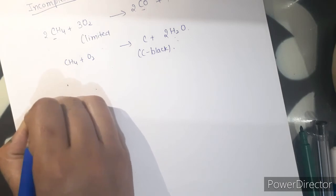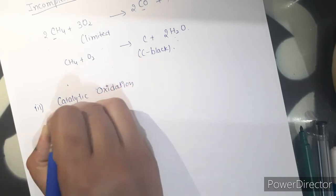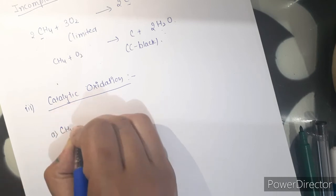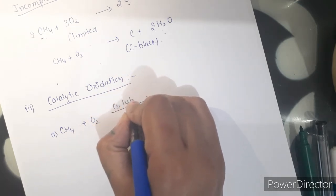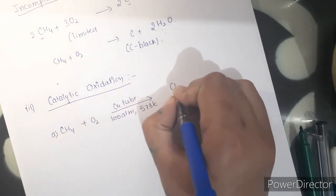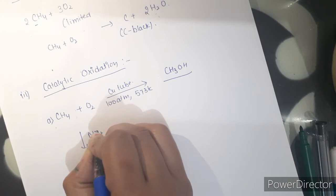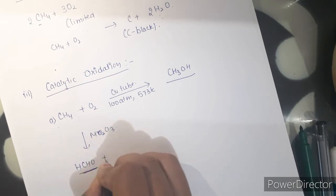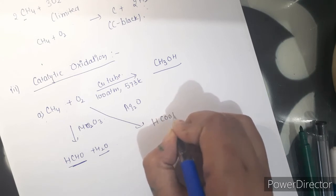Next is catalytic oxidation. When oxidation of alkane takes place in the presence of a catalyst — when a mixture of methane and oxygen is placed in a copper tube at 100 atmospheric pressure and 573 Kelvin temperature, the alkane is converted into alcohol. In the presence of molybdenum oxide, alkane gives aldehyde. And in the presence of silver oxide, alkane is converted into carboxylic acid.